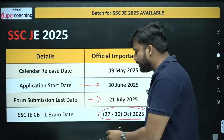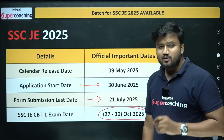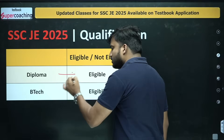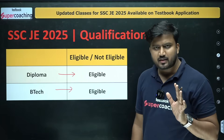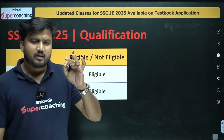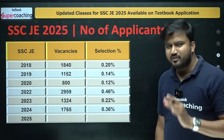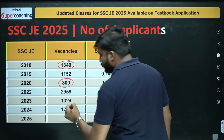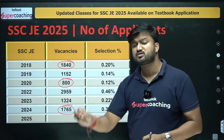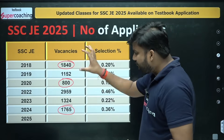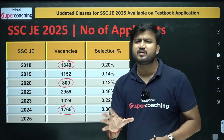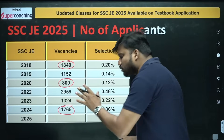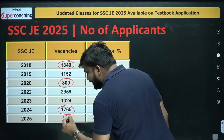First detail is that whether you are from diploma or degree, in both cases you are eligible. No experience is required for diploma and no experience is required for degree. This video is purely in English. Next, the number of vacancies: it was 1840 in 2018, 800 in 2020, and 1765 in 2024. Based on this data, the average number of vacancies SSC has produced per year is approximately 1500.